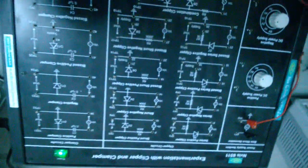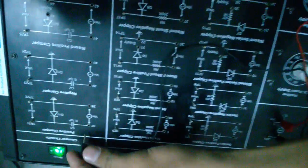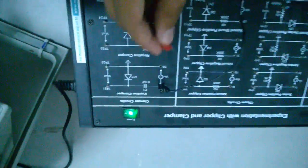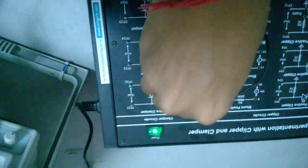So similarly, we are using the clamper circuits. Clamper circuits are used to amplify the DC signal present in an input wave.